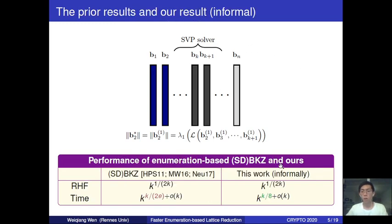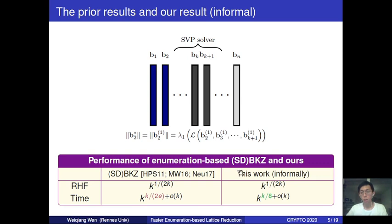For comparison between our results and prior ones, including BKZ and SDBKZ—where SDBKZ is a variant of BKZ that runs BKZ not only over the given basis but also over the dual basis—when relying on an enumeration-based SVP solver to reach quality like root Hermit factor equal to k^{1/(2k)}, the time complexity is dominated by the SVP solver, given as k^{k/(2e)} plus a small order of k. In this work, for reaching the same quality, we achieve a smaller time complexity of k^{k/8} plus a small order of k.